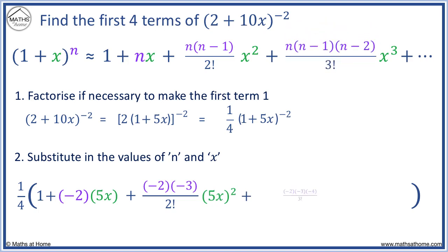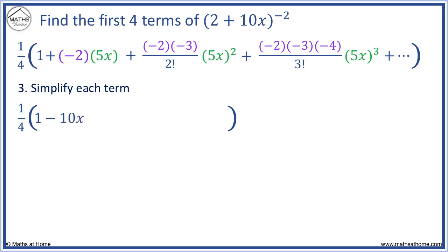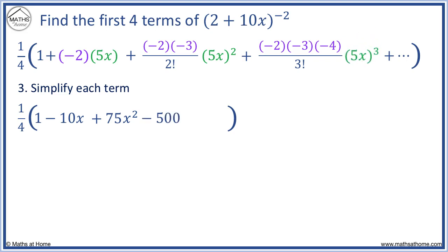The third fraction becomes minus 2 times minus 3 times minus 4 all over 3 factorial, and x cubed becomes (5x) cubed. Now we simplify each term, leaving the quarter outside for now. 1 is 1. Minus 2 times 5x equals minus 10x. Minus 2 times minus 3 divided by 2 factorial, times 5 squared, equals 75x squared. Minus 2 times minus 3 times minus 4 divided by 3 factorial equals minus 4, and multiplied by 5 cubed equals minus 500x cubed.